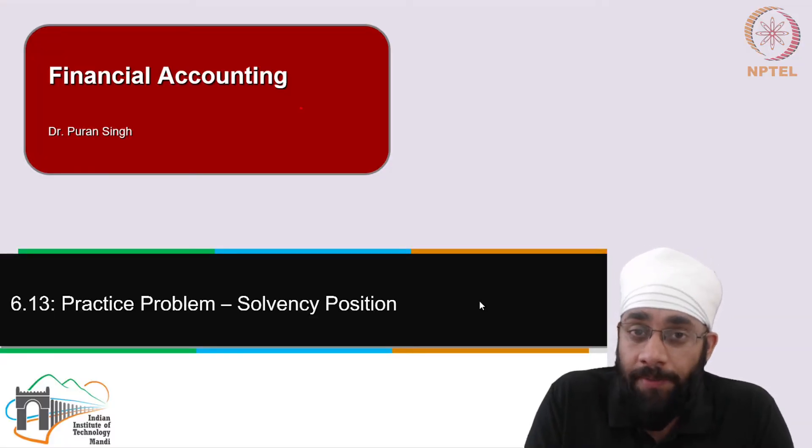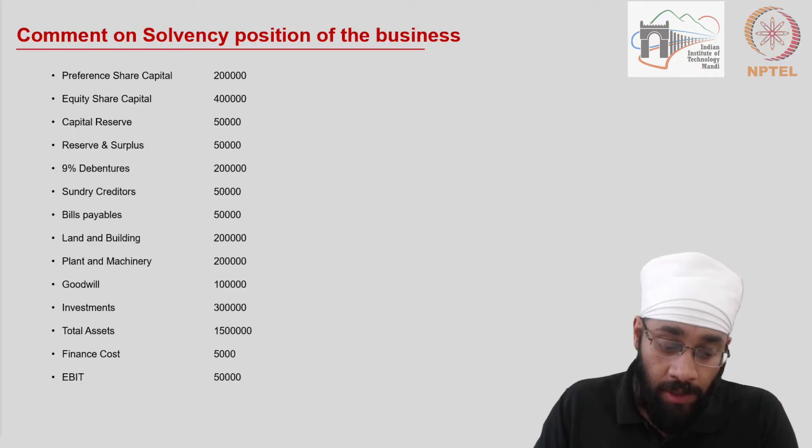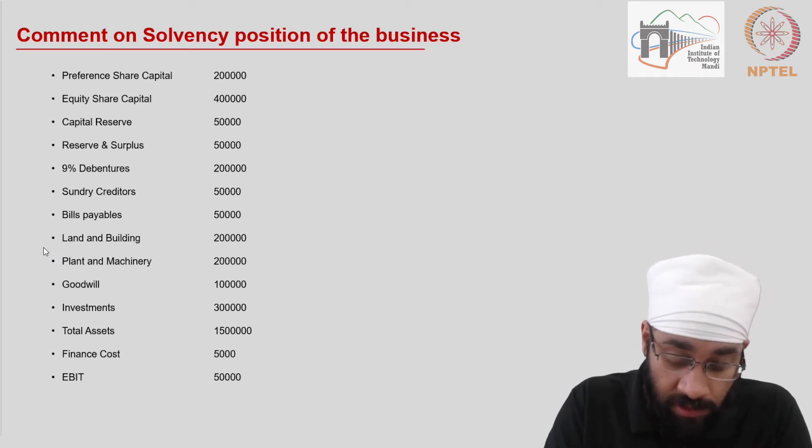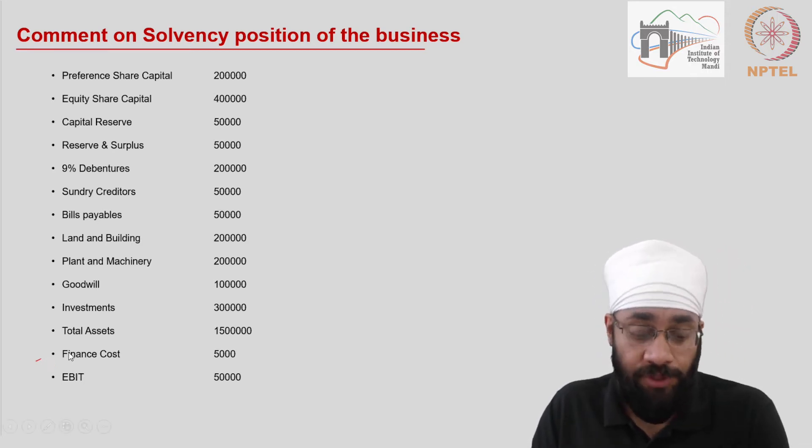In this video we are going to look at a practice problem where we will comment on the solvency position of a company, which is the long-term financial position of the company. On the slide we have a list of items which has share capital to current liabilities, non-current liabilities, fixed assets, short-term assets, EBIT, finance costs, etc. Some details are given and we have to comment on the solvency position.